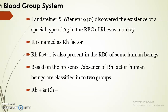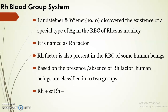Next we can see the Rh blood group system. It was discovered by Landsteiner and Wiener in 1940. They identified a special type of antigen on the surface of RBCs of rhesus monkeys and named it the Rh factor or rhesus factor. The Rh factor is also present in the RBCs of some human beings and absent in others. Based on the presence or absence of the Rh factor, human beings are classified into Rh positive and Rh negative groups.